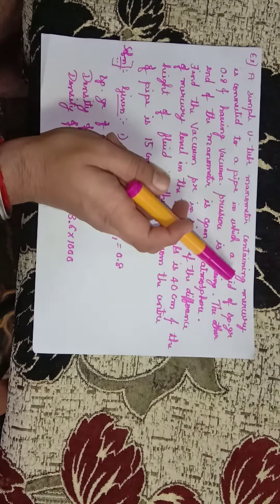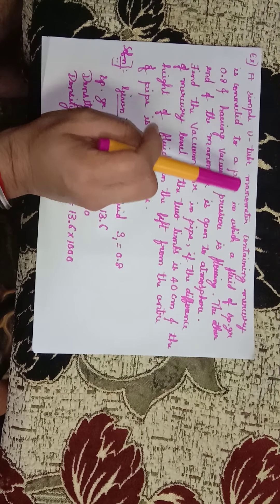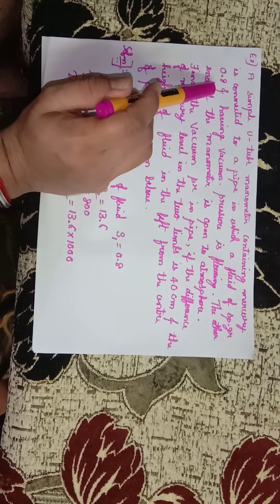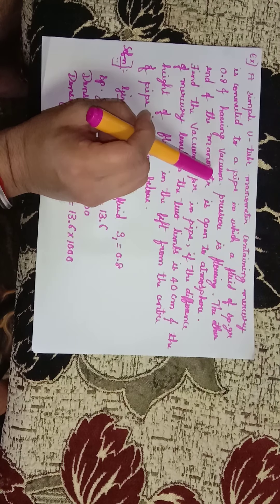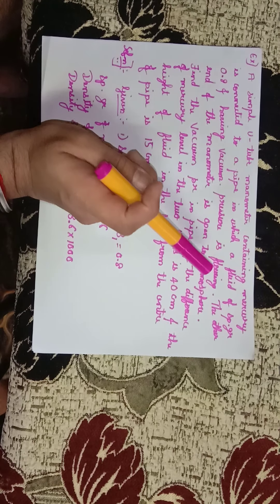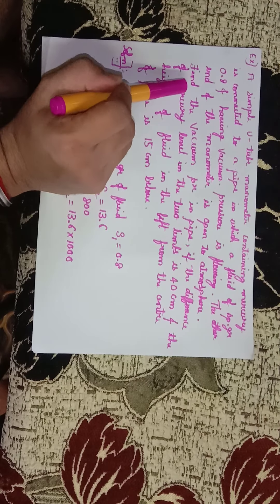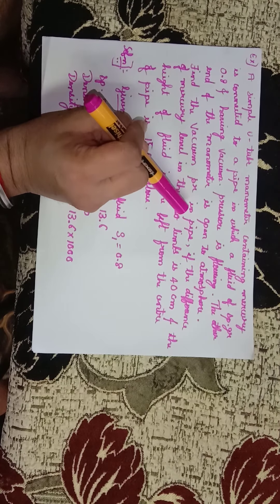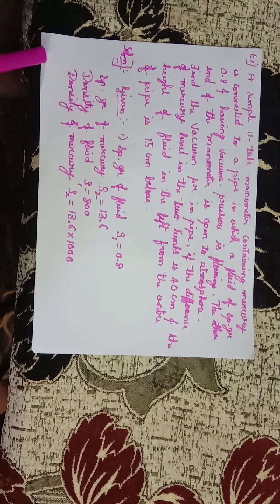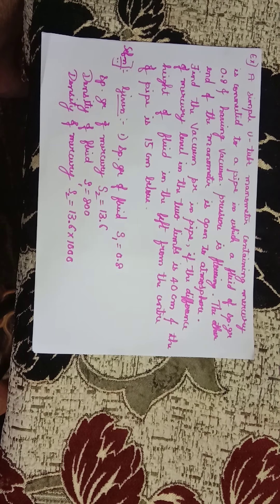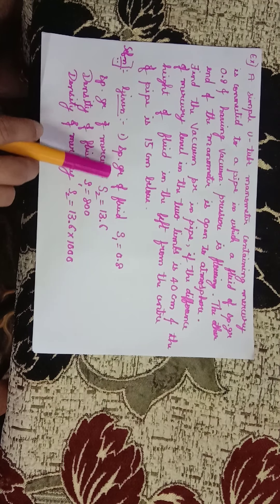A simple U-tube manometer containing mercury is connected to a pipe in which a fluid of specific gravity 0.8 and having vacuum pressure is flowing. The other end of the manometer is open to atmosphere. Find the vacuum pressure in the pipe if the difference of mercury level in the two limbs is 40 centimeters and the height of the fluid in the left limb from the center of the pipe is 15 centimeters below.